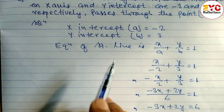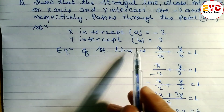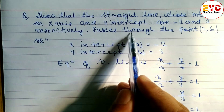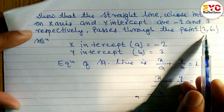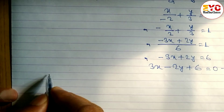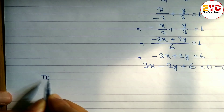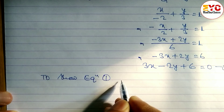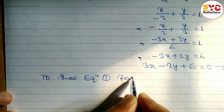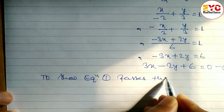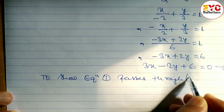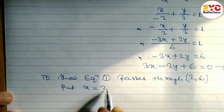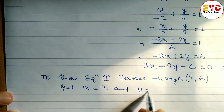According to the question, we are not only finding the equation of the straight line — we also have to show that this equation passes through the point (2, 6). So Equation 1 passes through the point (2, 6): put x = 2 and y = 6.